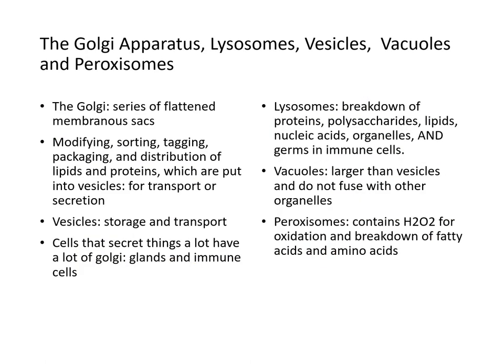The Golgi apparatus consists of a series of flattened membranous sacs. It modifies, sorts, tags, packages, and distributes lipids and proteins into vesicles used for transport or secretion. Vesicles serve as the storage and transport vessels within the cell.